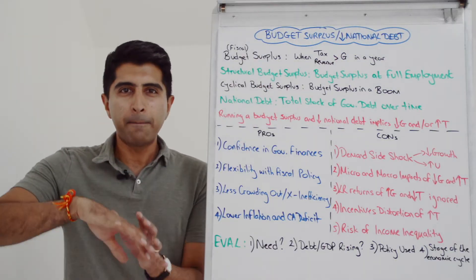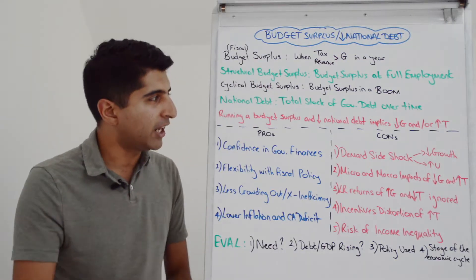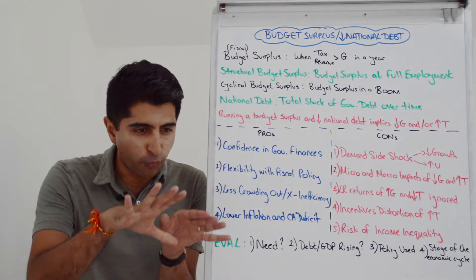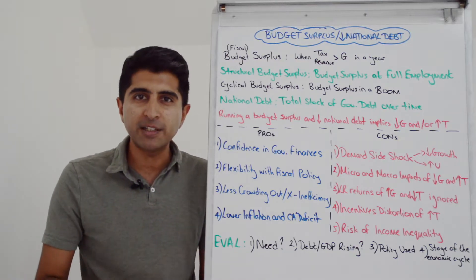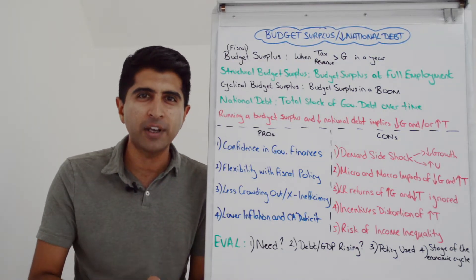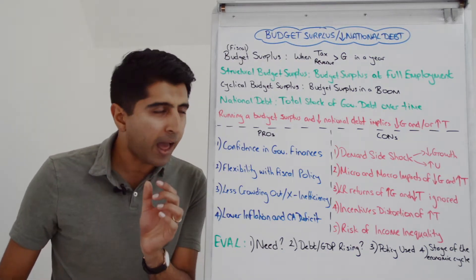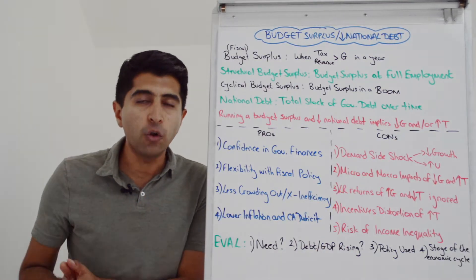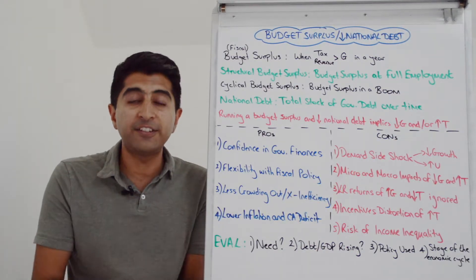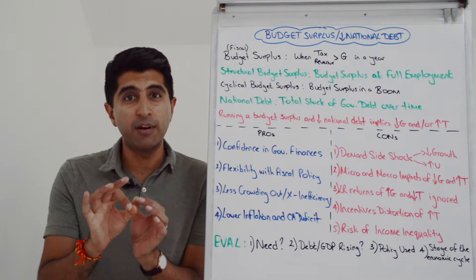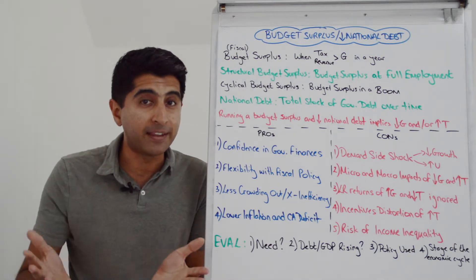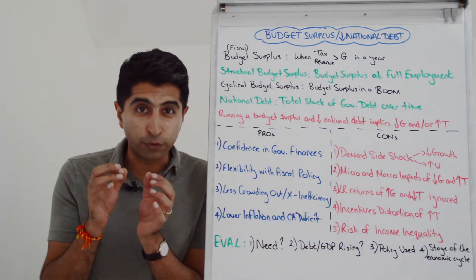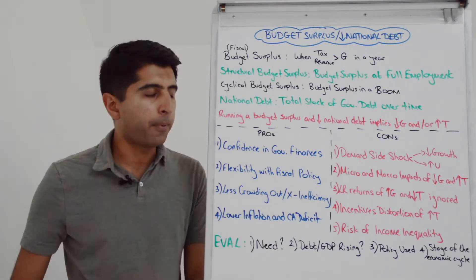Bearing all that in mind, it should be very clear that running a budget surplus or reducing a budget deficit and reducing the national debt implies that government spending is coming down and/or taxation is rising. Contractionary fiscal policy basically is being used. Another name for these policies is austerity policies.